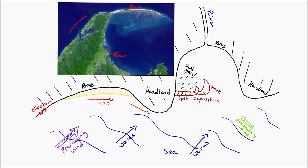Now in the photo that you can see that I've just put in above the diagram, this is a real spit, and you can see that I'm labeling the different types of features that I've also labeled on the hand-drawn diagram below.